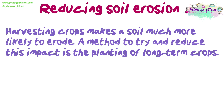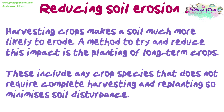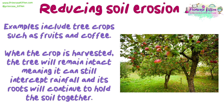Harvesting crops makes soil much more likely to erode. A method to try and reduce this impact is the planting of long-term crops. These include any crop species that does not require complete harvesting and replanting, so it minimises soil disturbance. Examples include tree crops such as fruits and coffee. When the crop is harvested, the tree will remain intact, meaning it can still intercept rainfall and its roots will continue to hold the soil together.